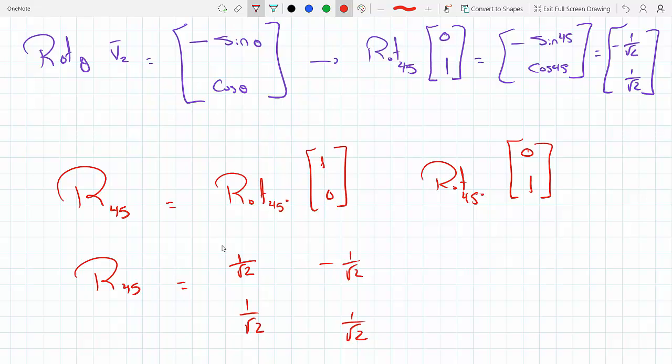Or if you want to write it in terms of sines and cosines this will be cosine 45, sine 45, or minus sine 45, cosine 45. If the angle is anything other than 45 then you just plug in that angle.